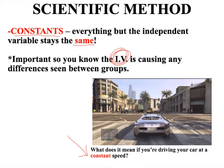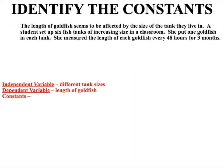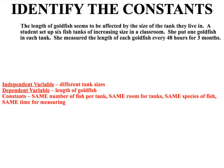Looking back at our example, we changed the tank size and we're measuring the length of goldfish to see if that change makes a difference. What has to stay the same? She's using the same number of fish per tank, the tanks are all in the same classroom, all of the fish are goldfish — the same species — and she did the measurements at the same time, every 48 hours for three months. So even though the tank size changed, all this other stuff stayed the same so that any differences we see would be because of the tank.